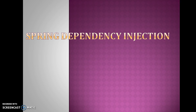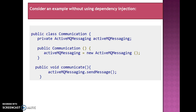Dependency injection helps to wire these classes together while at the same time keeping them independent. In Spring, objects define their associations or dependencies and do not worry about how to get those dependencies. It is the responsibility of Spring to provide the required dependencies for creating objects. The responsibility of creating objects is shifted from our application code to a Spring container — this phenomenon is called IOC, or Inversion of Control. Spring helps in creating loosely coupled applications because of dependency injection.